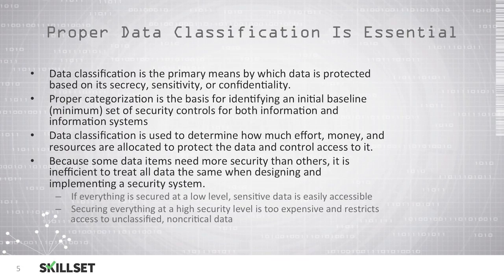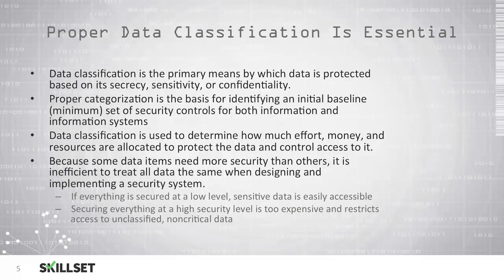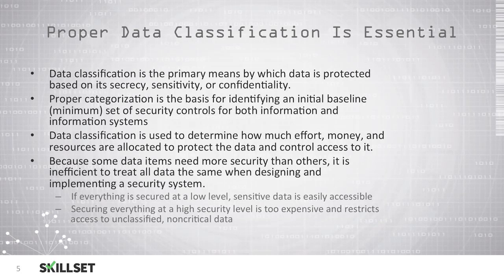For example, you will spend much more time and effort to protect data that is top secret compared to data that is unclassified. Because some data is very sensitive and other data is not, it is not efficient to treat all data the same when designing your security systems. If you secure everything at a low level, then people will be able to easily access sensitive data. And if you secure everything at the highest security level, you will spend a lot of money and resources to restrict data that is not critical.